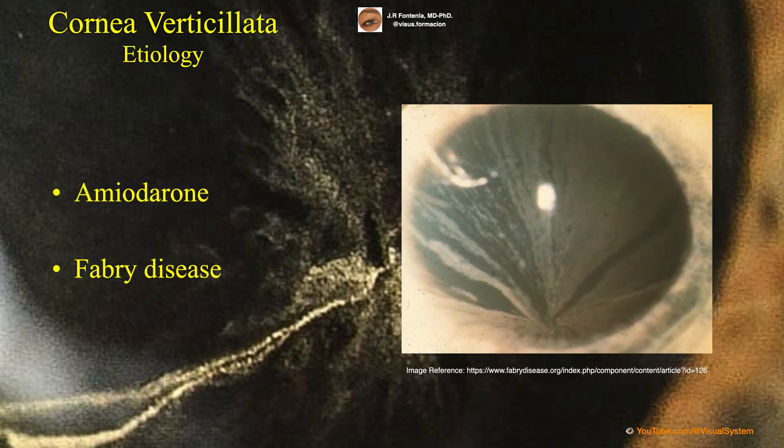The most important associations are two: with amiodarone and Fabry disease. In fact, 90% of those affected by this disease have cornea verticillata. In addition to these two pathologies, other associations have been described that we will show exhaustively listed at the end of this video, and that will help us to establish the differential diagnosis of the cause.